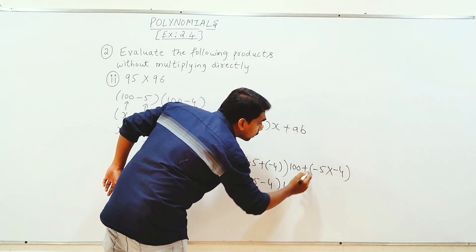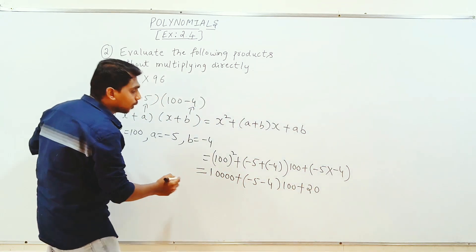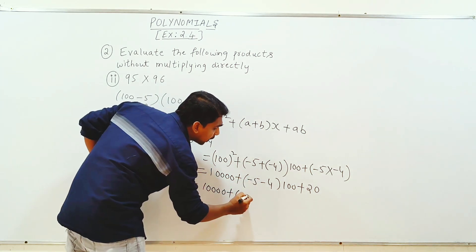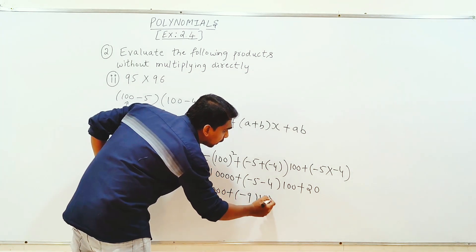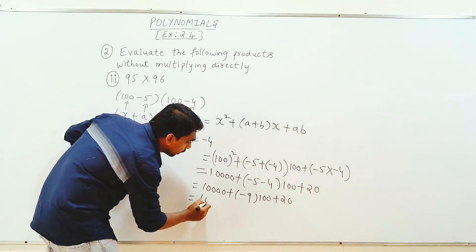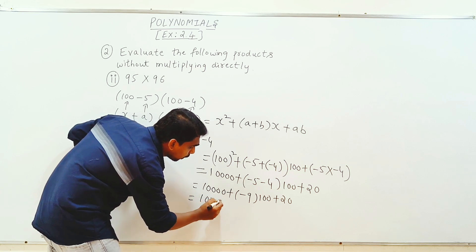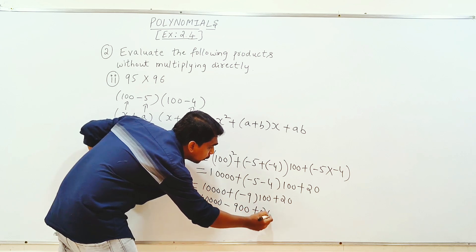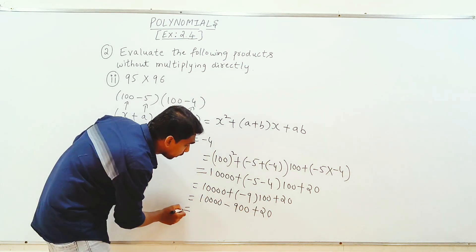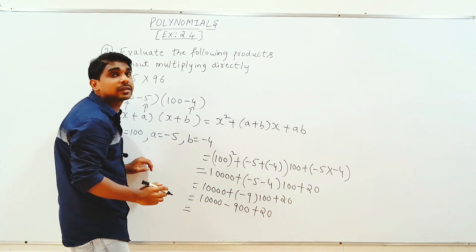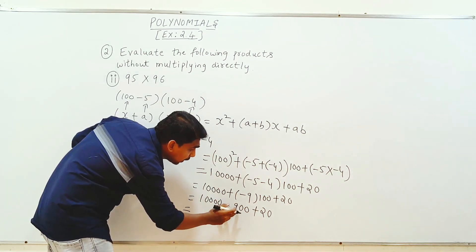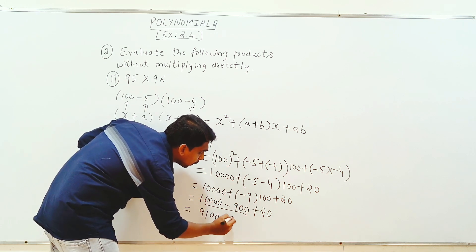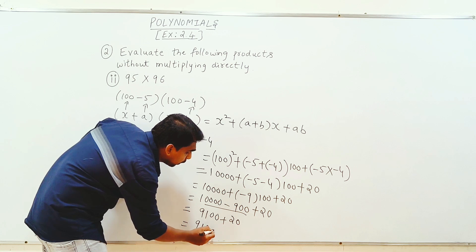5, 4 is 20. 10,000 plus minus 5 minus 4 minus 9 into 100 plus 20. 10,000 minus 900, so 10,000, 900, 9,100 plus 20. 9,120.